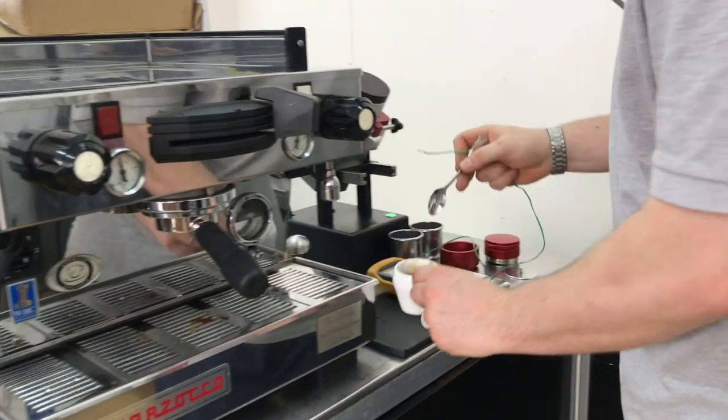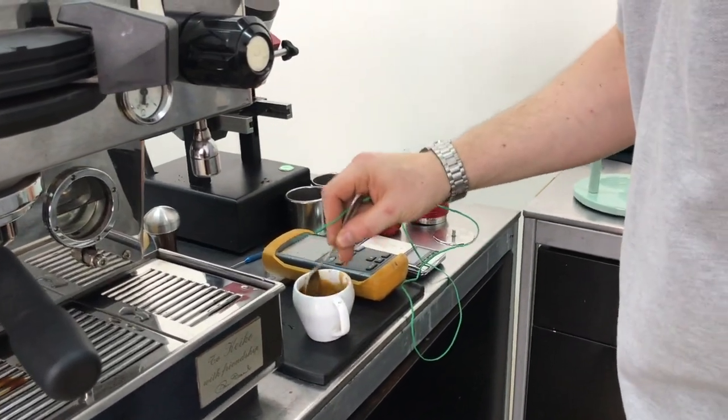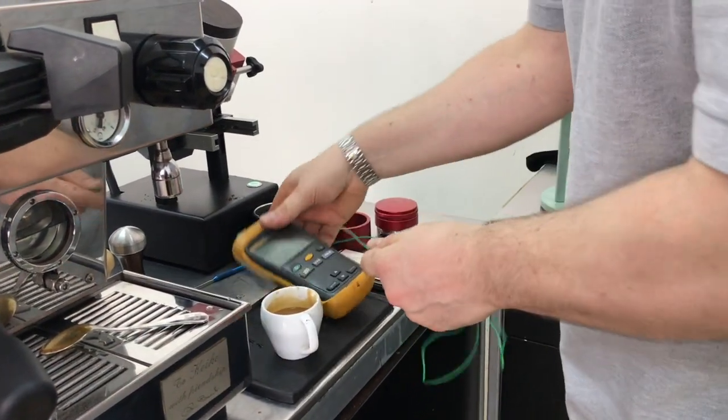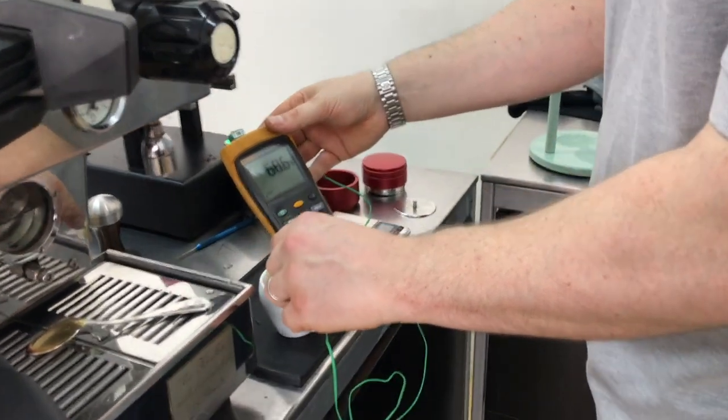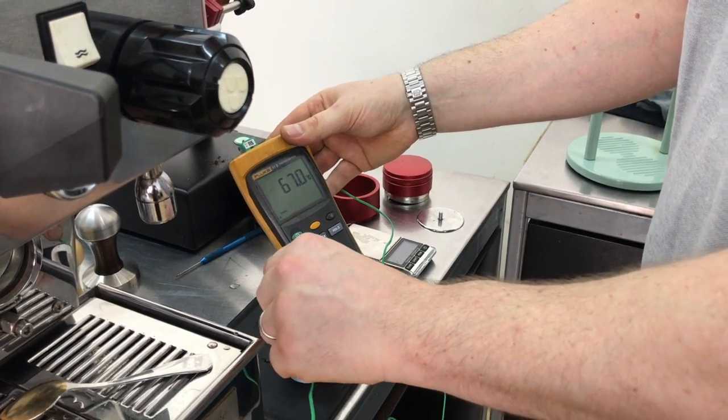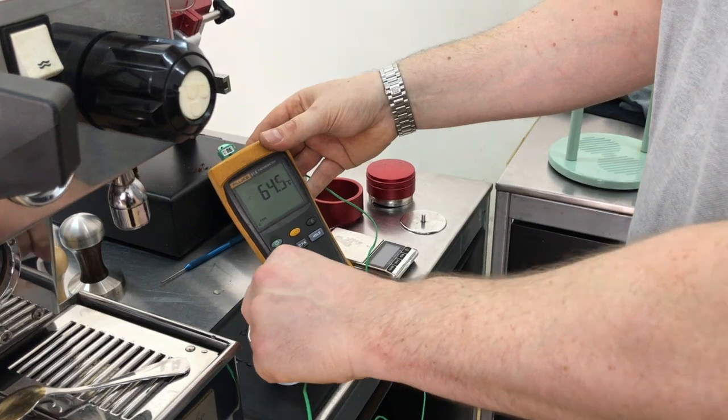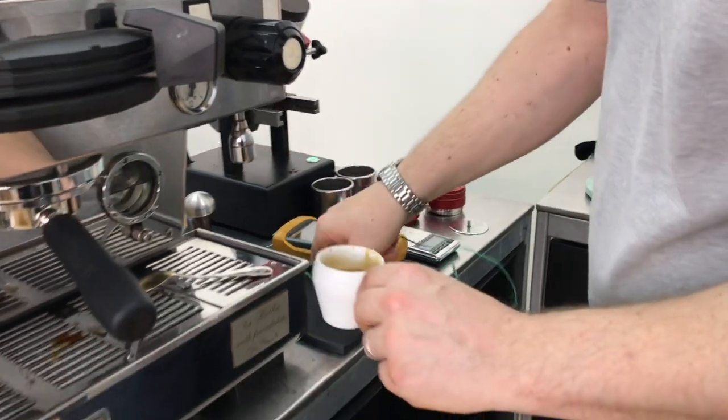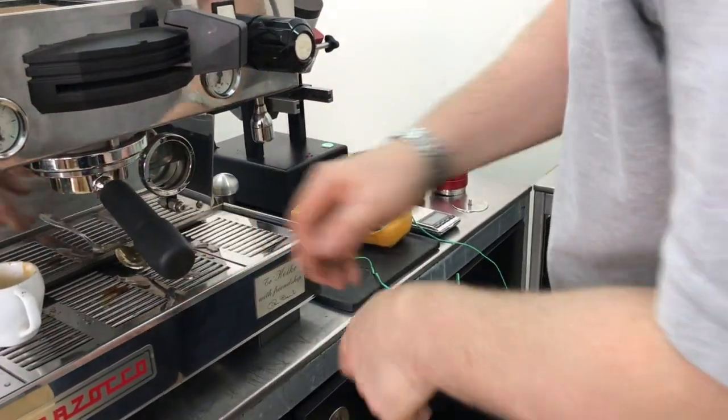So there's our shot from the La Marzocco. We'll just measure what it is in the cup. So we have a stir. So what have we got? 67 degrees. Yeah, so it's about 67 degrees C in the cup, preheated cup.